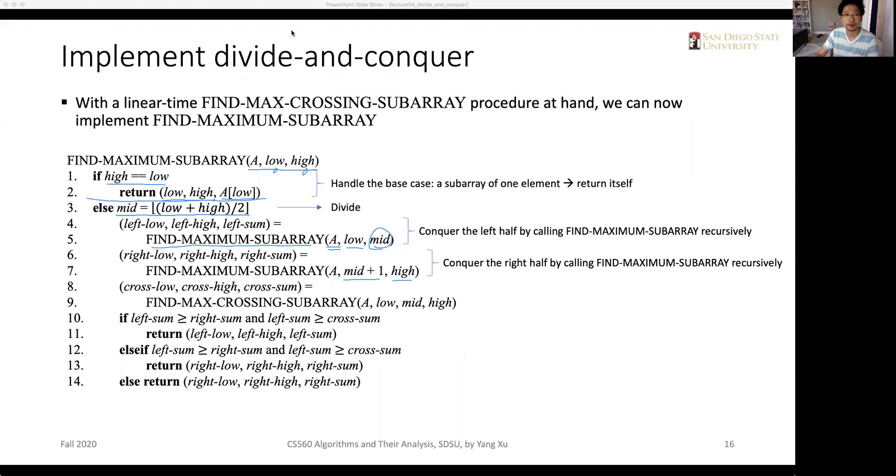The next step, we solve the special case by calling the find max crossing sub-array special procedure that we defined in the previous procedure. And it takes four inputs.